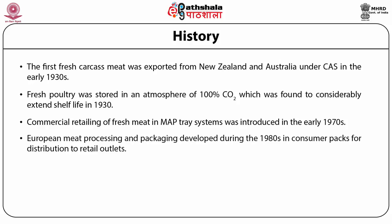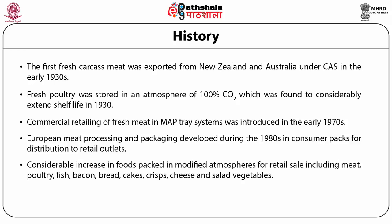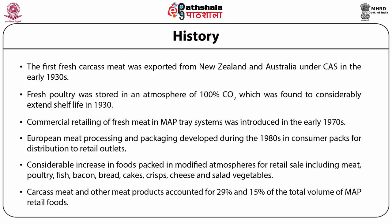European meat processing and packaging developed during the 1980s with centralized production of MAP meat in consumer packs for distribution to retail outlets. In the past few years, there has been a considerable increase in the range of foods packed in modified atmospheres for retail sales, including meat, poultry, fish, bacon, bread, cakes, crisps, cheese, and salad vegetables. Carcass meat and cooked meat and meat products accounted for 29% and 15% of the total volume of MAP retail foods.